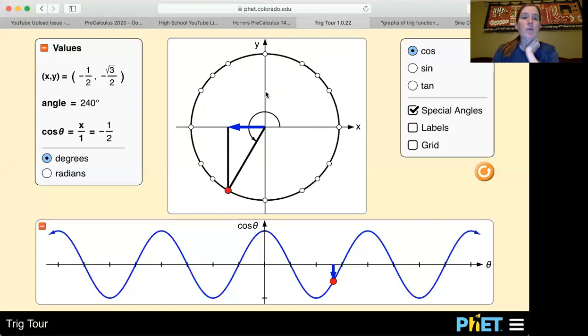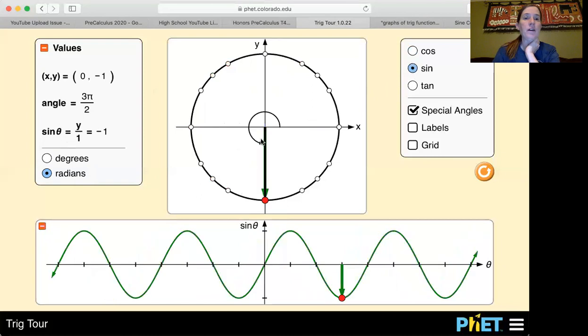And then if we have a quadrant angle like 270 degrees, we change it to radians, that's 3 pi over 2. Cosine is the x value, which would be 0. Sine is the y value, which is negative 1. And so when an angle is on a quadrant, it's easy to find the ones and the zeros.